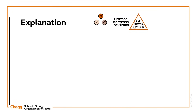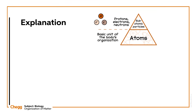Protons and neutrons make up the nucleus of an atom and electrons revolve around the nucleus. When atoms have different combinations of protons, neutrons and electrons, they have different mass and charge and therefore behave in different ways. Each of these combinations creates a different type of atom, and it's these atoms that go towards making everything else in the world.